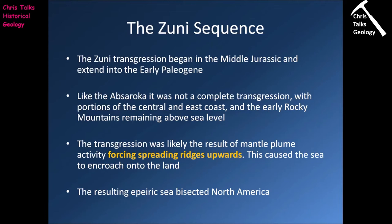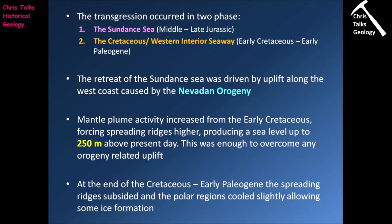The Epiric Sea that formed ended up bisecting North America, cutting it in two. The formation of the Zuni sequence took place in two phases. The first phase produced the Sundance Sea, between the middle to late Jurassic, driven by a general global sea level rise as the ocean moved onto the continents. As we move into the late Jurassic, the Sundance Sea begins retreating, driven by the Nevadan Orogeny pushing up the western side of North America and forcing the Sundance Sea back out into the ocean basin.